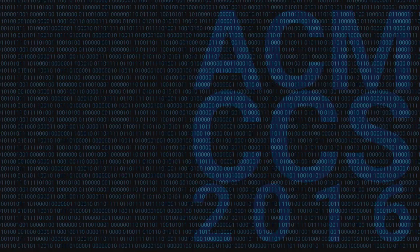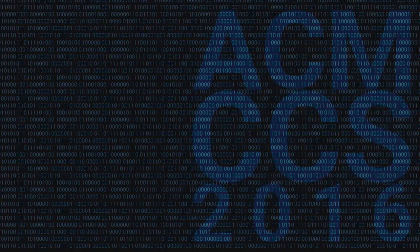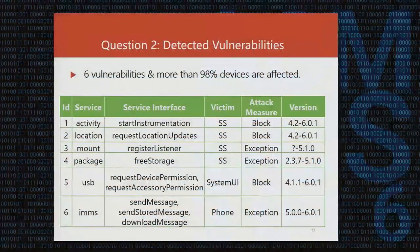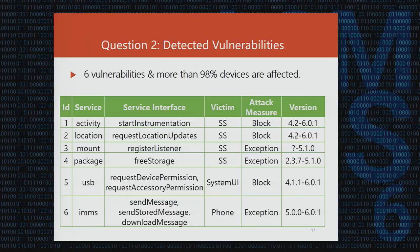During Q&A, a question was raised about whether these attacks also affect Android version 7. The presenter responded that they had not tested on Android 7. Regarding Google's response, the presenter confirmed that the vulnerabilities had already been reported to Google, and Google confirmed the findings, though a solution had not yet been provided. The presenter believes Google will solve these problems quickly.